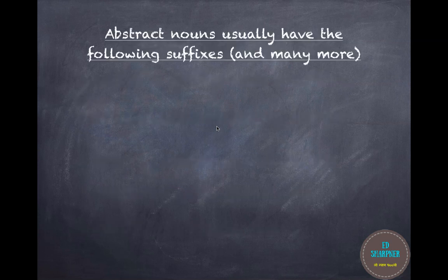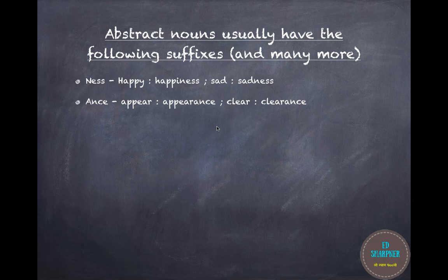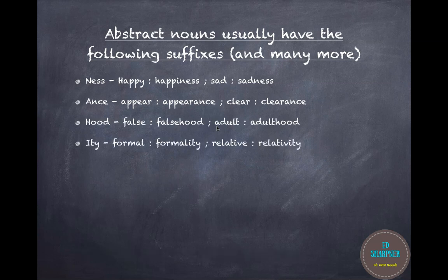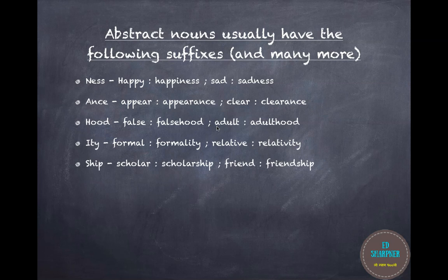Abstract nouns usually have the following suffixes: -ness, like happiness or sadness; -ance, like appearance or clearance; -hood; -ity, like formality or relativity; -ship, like scholarship or friendship; and -ment, like achievement or enjoyment.